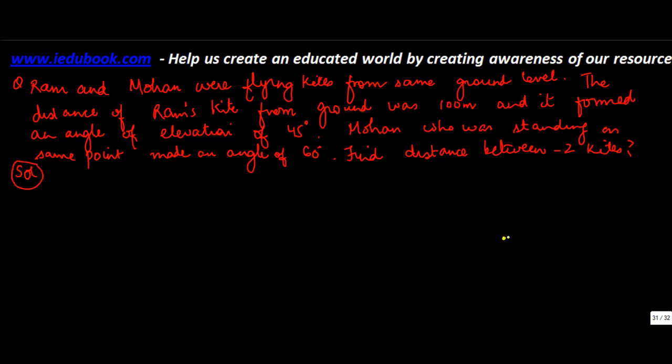Let's envisage this situation. You have two people, Ram and Mohan, who were standing on the same point and they are flying kites. When you fly a kite, you have a thread. Let's say this was the kite of Ram. The distance of Ram's kite from the ground was 100 meters. This is the distance between Ram's kite and the ground, so we know this height is 100 meters.